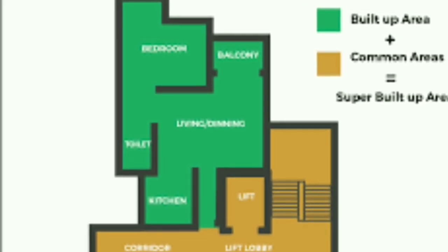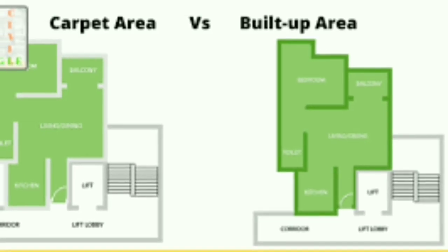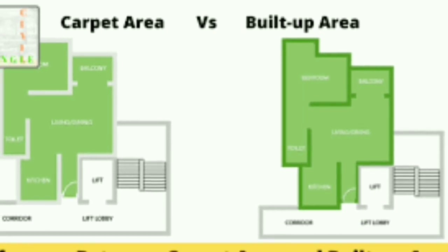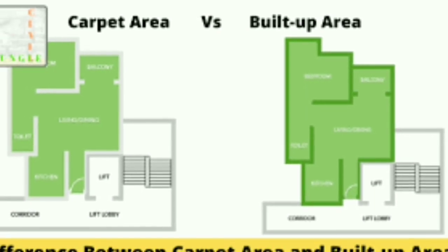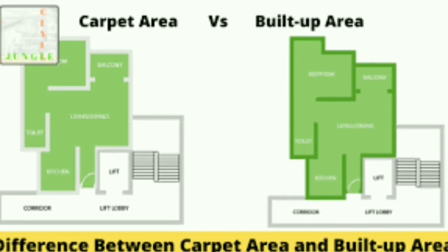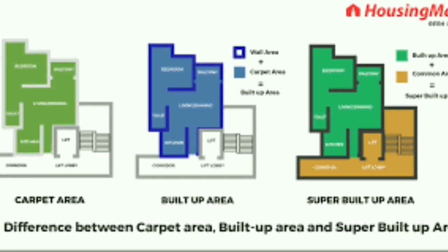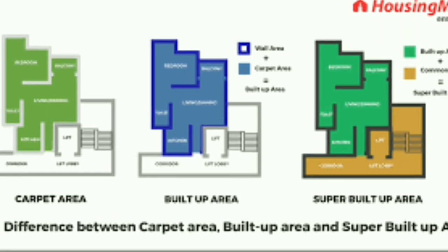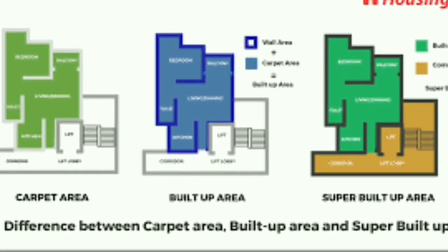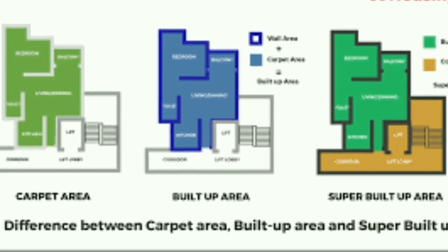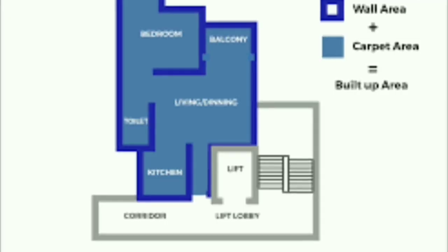Regarding the plinth area and built-up area: by definition, the built-up area is the total covered area of an apartment or property unit. It can be calculated by adding the area of walls within the property unit — both internal and external walls — to the carpet area. As a rule of thumb, built-up area can be calculated by adding a 10% loading factor on carpet area.